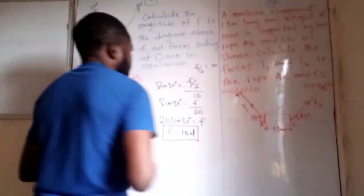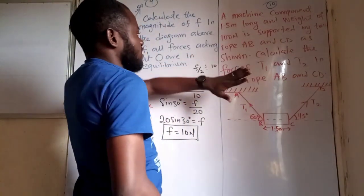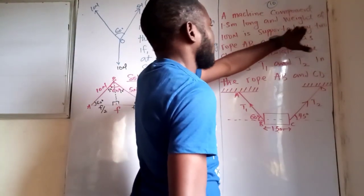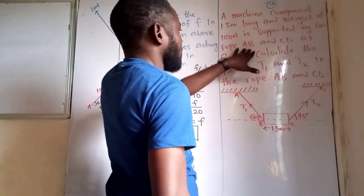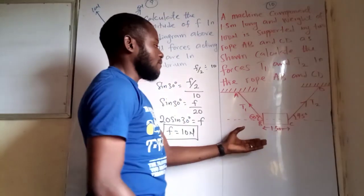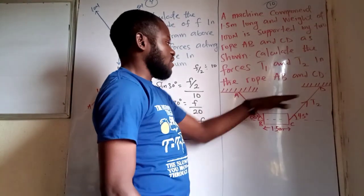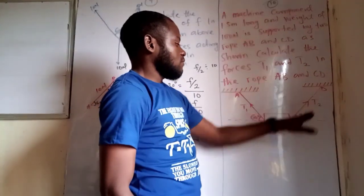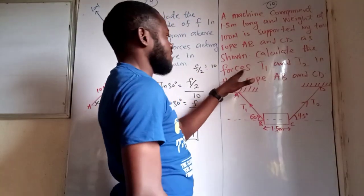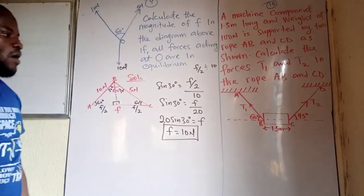Let's look at question 10. A mansion component 1.5 meters long with a weight of 100 newtons is supported by two ropes AB and CD as shown. We need to calculate the forces T1 and T2 in ropes AB and CD.